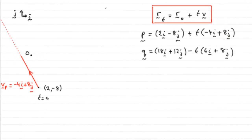For this next part, we're told that a second boat Q is also moving with a constant velocity. At time T hours, the position vector of Q is given by the vector Q kilometers, where Q equals 18i plus 12j minus T times 6i plus 8j. We've got to find the value of T when P is due west of Q.